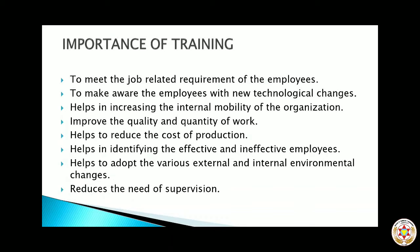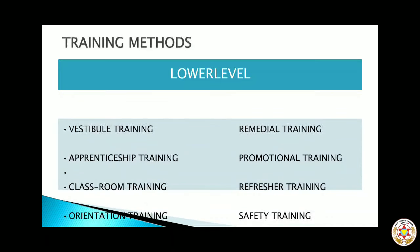Training also reduces the need of supervision among employees. The training methods are divided into two categories: lower level training programs and executive level training programs. Lower level training programs are given to the lower level of the organization — daily skilled or unskilled workers and production labor. These programs are based on two approaches: on-the-job and off-the-job training. Methods include vestibule training, apprenticeship training, classroom training, orientation training, remedial training, promotional training, refresher training, and safety training.